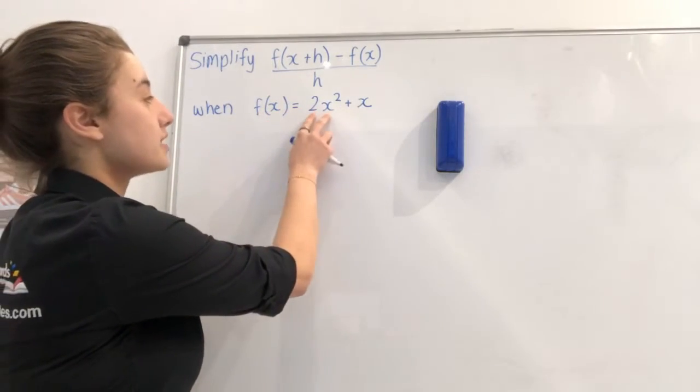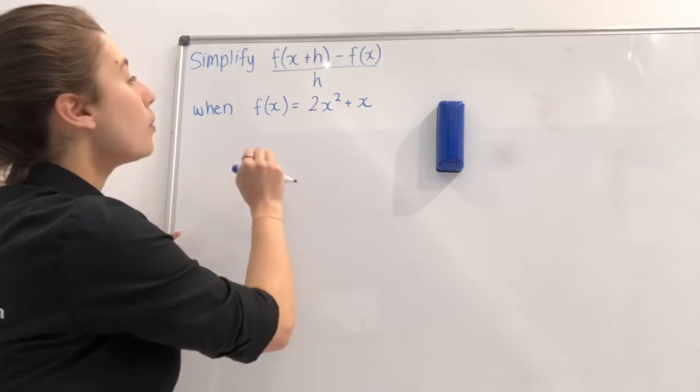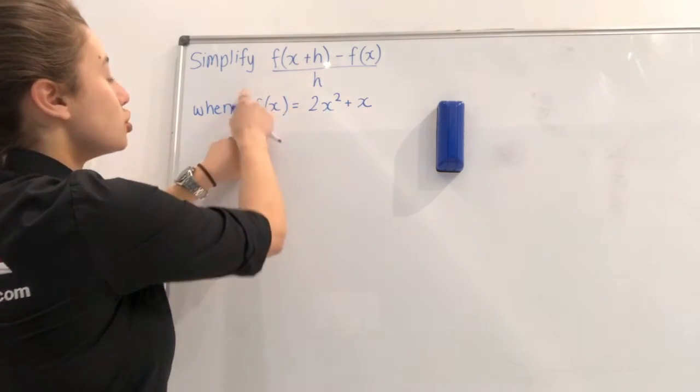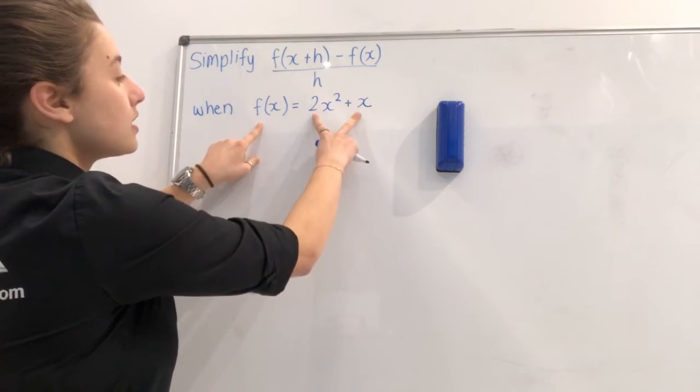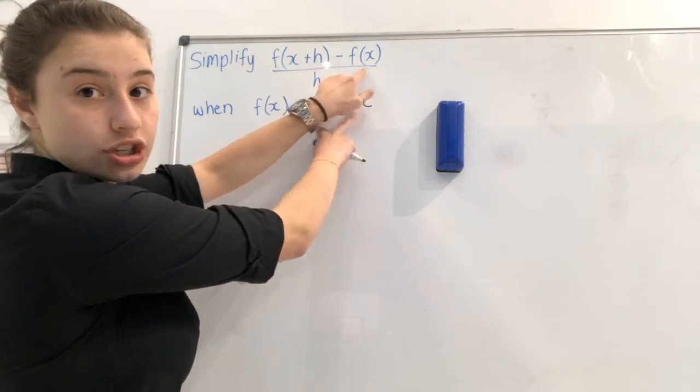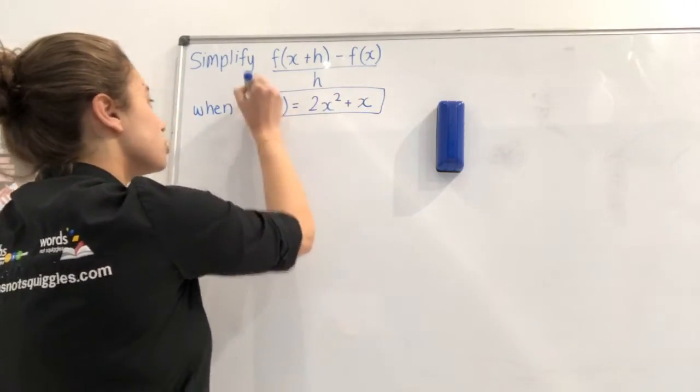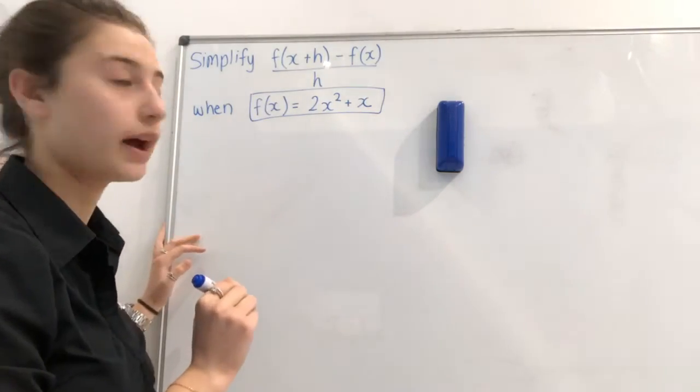They've told us that f of x equals 2x squared plus x. And what we're going to do is we're actually going to substitute in this expression here where we see f of x in the question. So this is going to be pretty important later and I'm just going to box it up so we don't forget to use it.